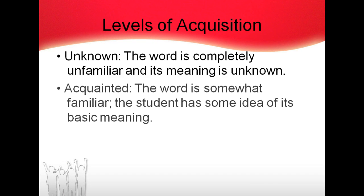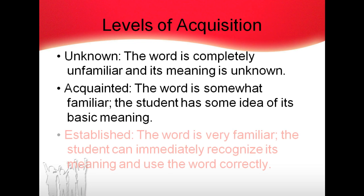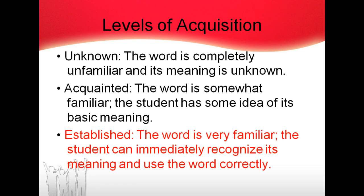Here are the different levels of acquisition. We're aiming for the word to become established — very familiar — where the student can immediately recognize its meaning and use the word correctly. That doesn't mean they can spell the word correctly; that's a whole other type of lesson. This is about understanding what it means, using inventive spelling to use it in their writing, and even using it in conversation.